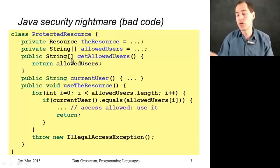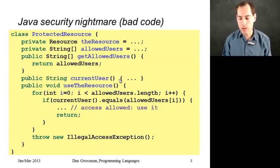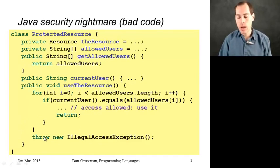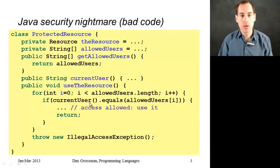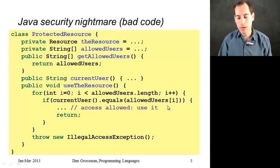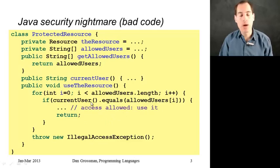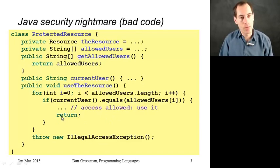You can see who the users are, even see if you're in the list. Maybe when the code is executing there's some notion of a current user. So that allows the main method to use the resource correctly - for every element of the allowed users array, it's going to see if the current user is the same string as in the i-th position of allowed users. If you find the current user in that array, go ahead and allow access. Otherwise, if the for loop finishes without returning, then throw an exception.